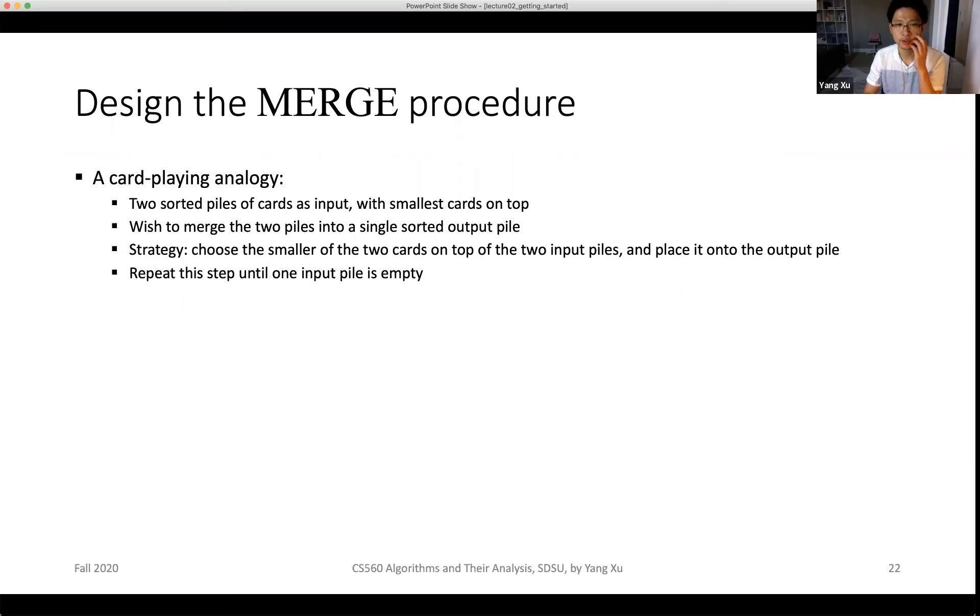We make a comparison with the two cards on top of each pile, choose the smaller one and put it into the output pile. We repeat this step until one input pile is empty. That is the basic idea of the merge procedure. After one pile is empty, we simply take the remaining pile and place it onto the output pile.